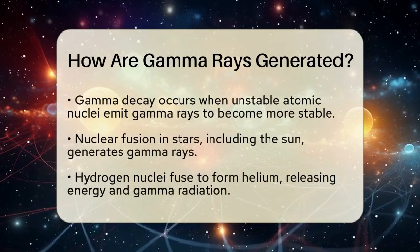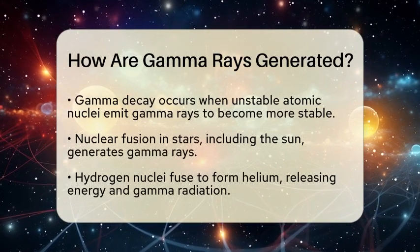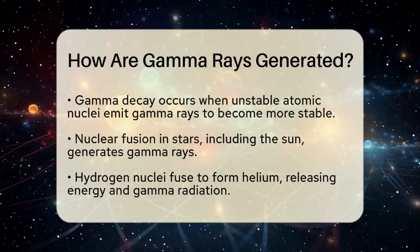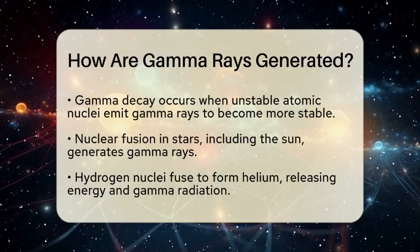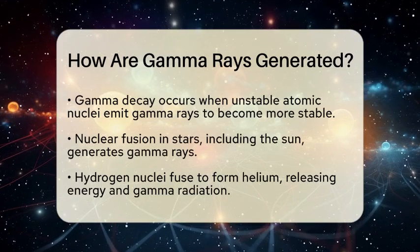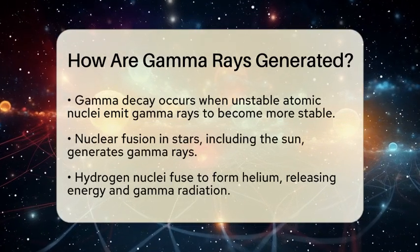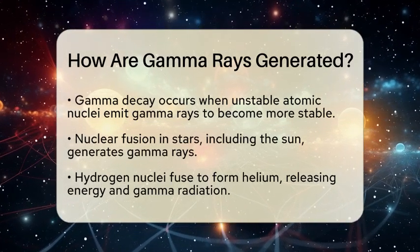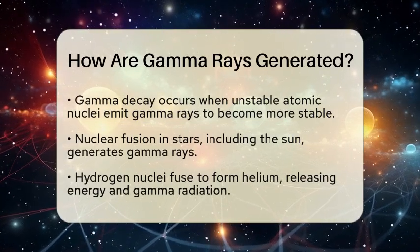Another way gamma rays are generated is during nuclear fusion, which occurs in stars, including our Sun. In these stellar environments, hydrogen nuclei fuse to form helium, releasing a tremendous amount of energy, including gamma radiation.